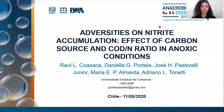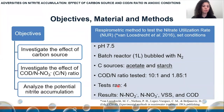Hello, I'm Daniela Portela, and I'm going to present the poster 'Adversities on Nitrite Accumulation: Effect of Carbon Source and COD:Nitrogen Ratio in Anammox Conditions'. The goals of this study were to investigate the effect of carbon source on nitrite production, using two different carbon sources: acetate, a readily biodegradable carbon source, and starch, a slowly biodegradable carbon source. We also investigated the effect of the COD:nitrate ratio, using a stoichiometric ratio ensuring excess of carbon (10:1) and another ratio ensuring a lack of carbon.